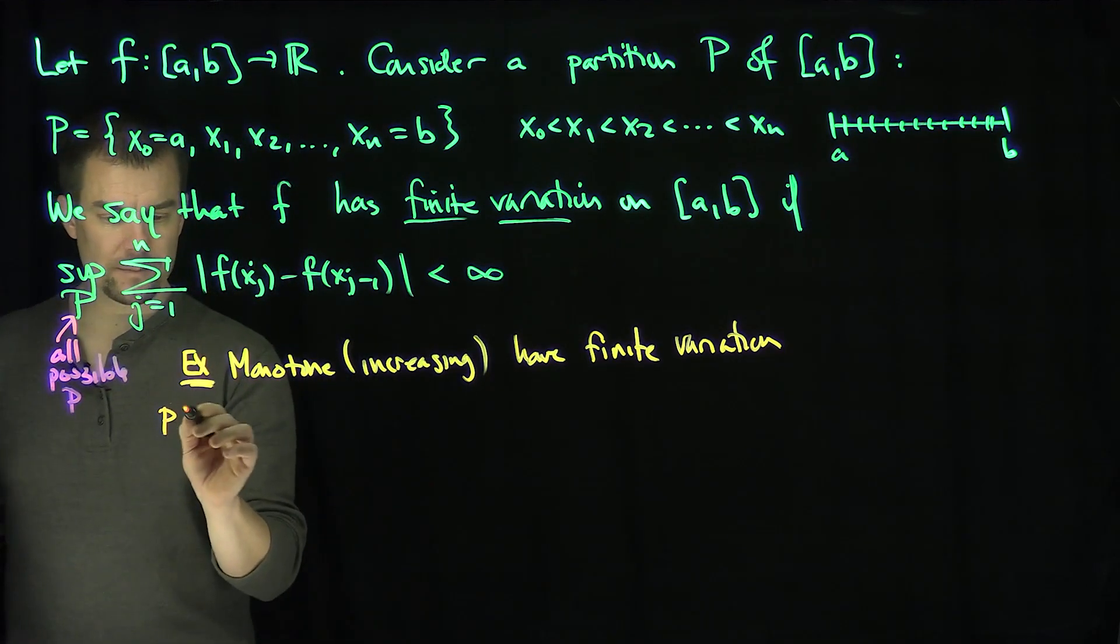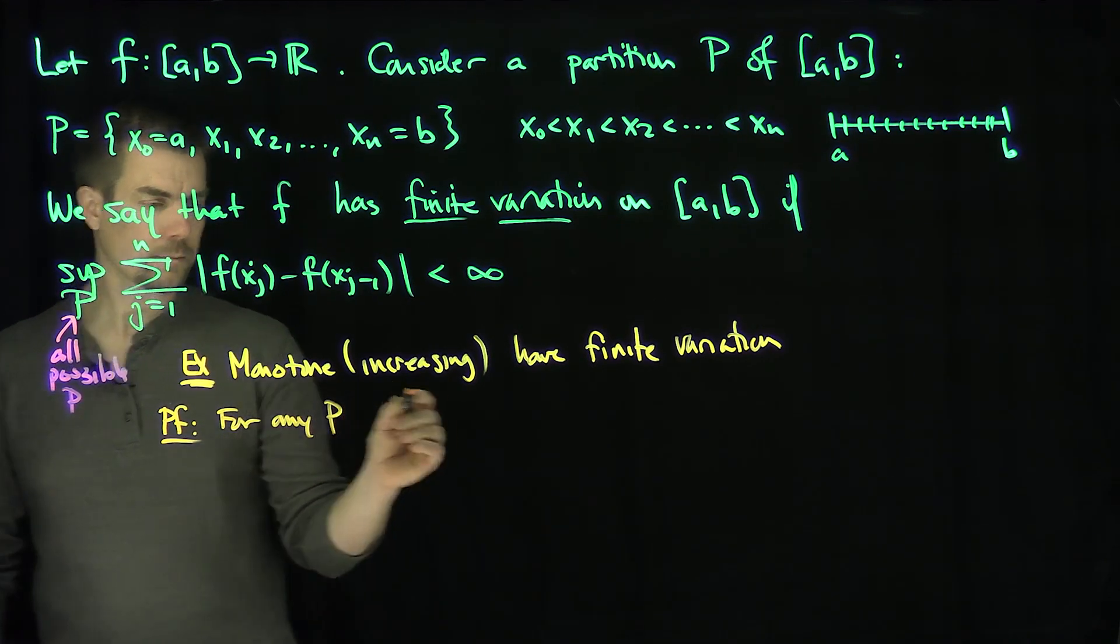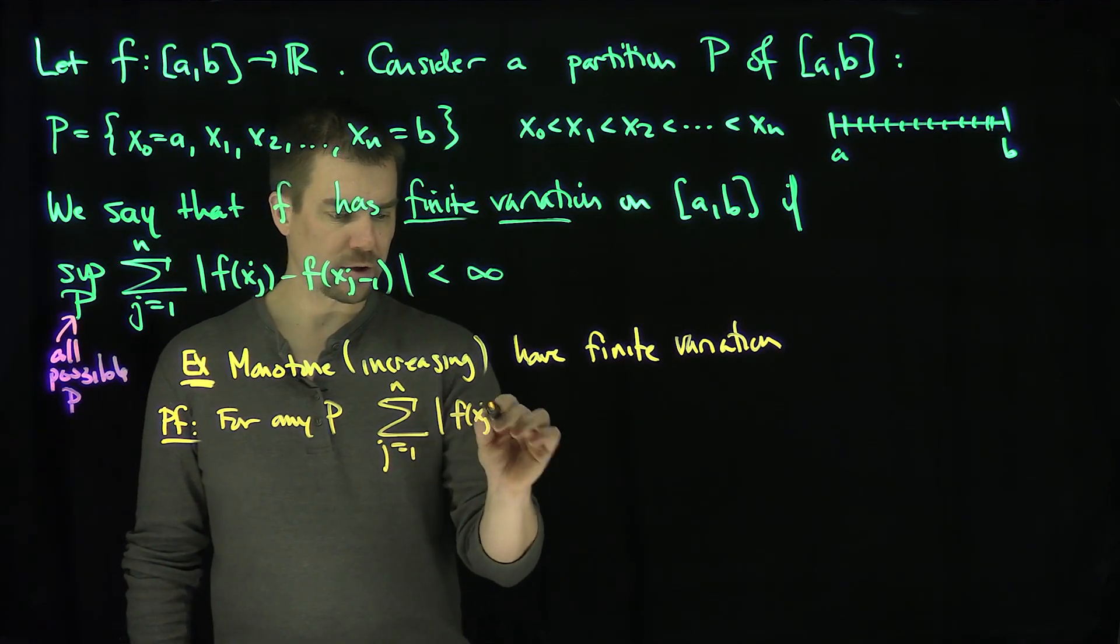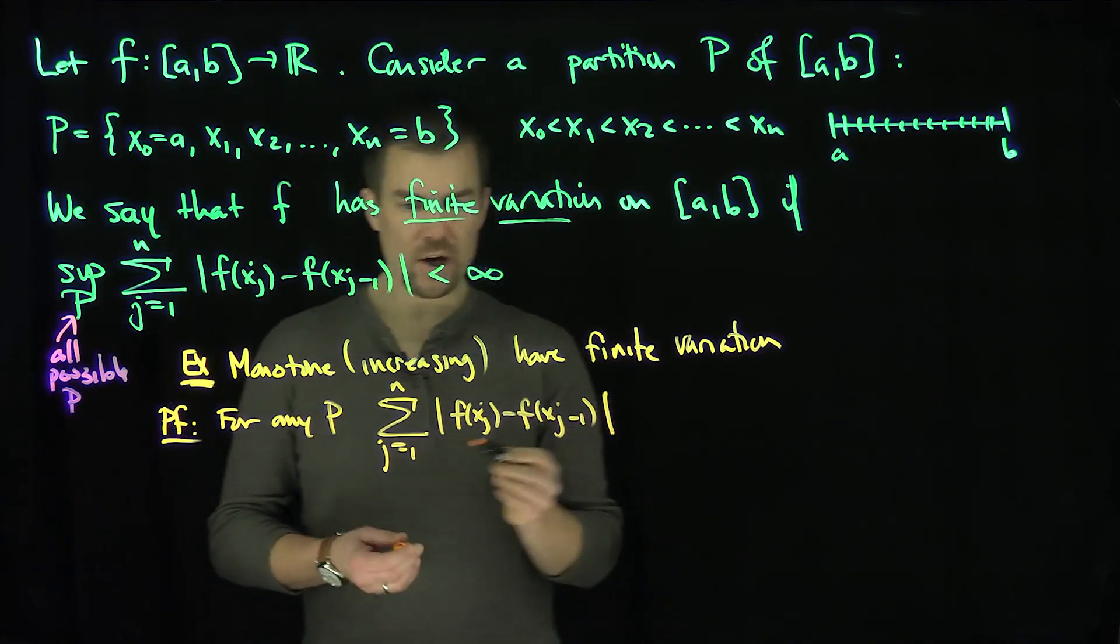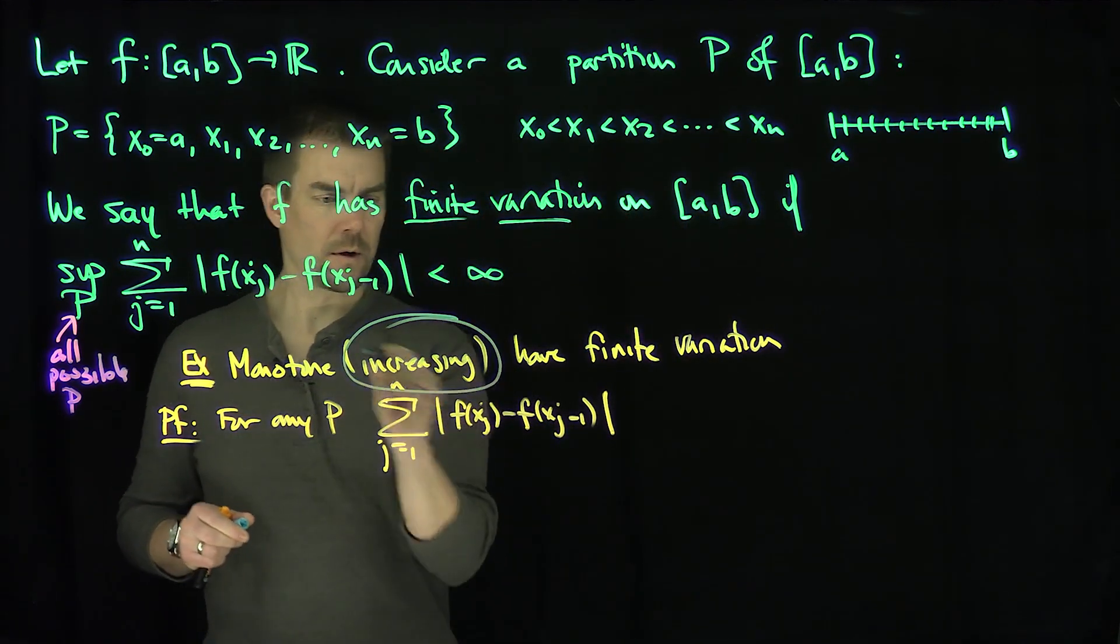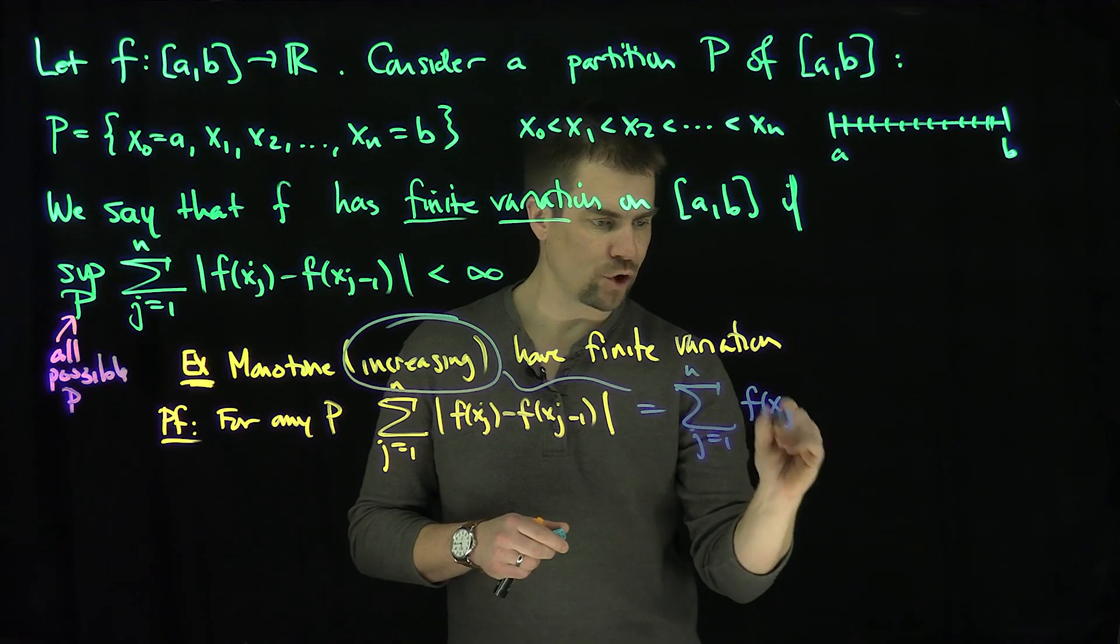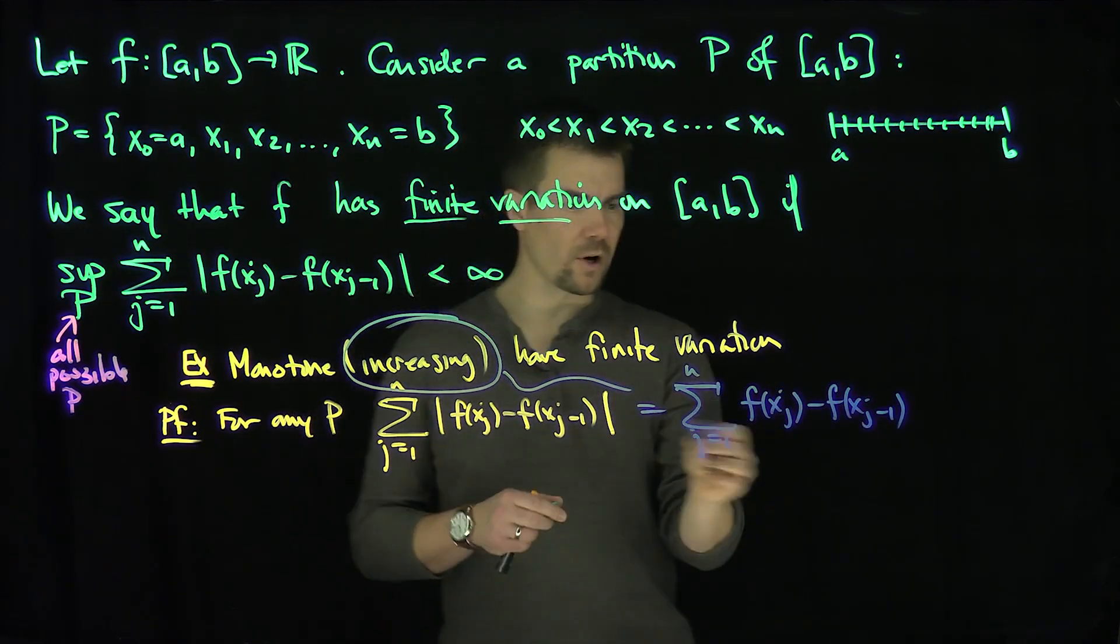The proof is that for any P, the sum from j=1 to n of |f(xj) - f(xj-1)| is equal to—we're assuming now that we're increasing—the sum from j=1 to n of f(xj) - f(xj-1). This sum is going to telescope because all of them are going to cancel.